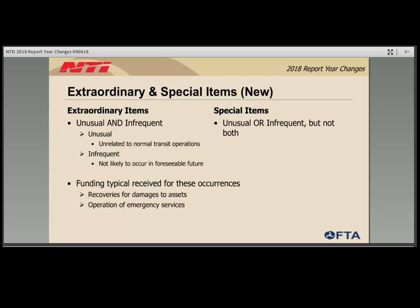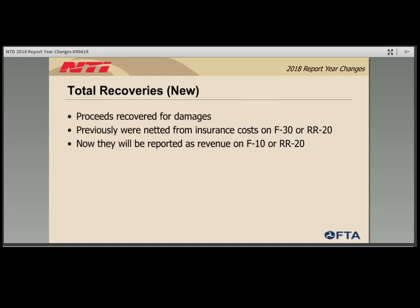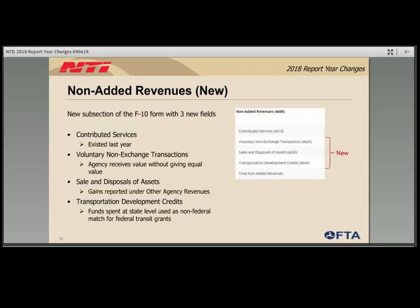The first new field is extraordinary and special items. Extraordinary items are occurrences that are unusual and infrequent — unrelated to normal transit operations and not likely to occur again. Special items are either unusual or infrequent, but not both. One example would be a blizzard that shuts down transit operations for multiple days. The second new field is total recoveries, which captures the proceeds recovered for damages. In prior years, these proceeds were netted against casualty and liability costs on the operating expense form; going forward, they are reported as revenues. A new subsection called non-added revenues includes one previously existing field — contributed services — plus three new fields: voluntary non-exchange transactions, sale and disposal of assets, and transportation development credits.